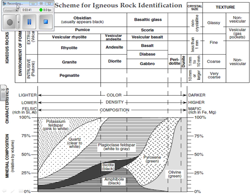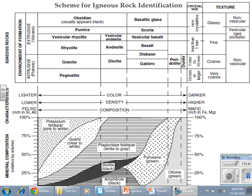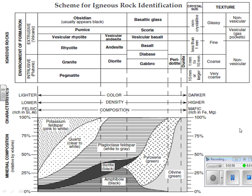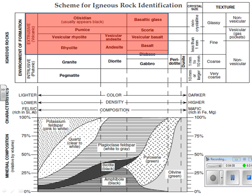Now let's look at the upper portion of the reference table. As you can see, it's separated into extrusive and intrusive igneous rocks. With extrusive igneous rocks, also known as volcanic, they include the following: obsidian, pumice, vesicular rhyolite, rhyolite, vesicular andesite, andesite, basalt, glassy basalt, scoria, vesicular basalt, and basalt.